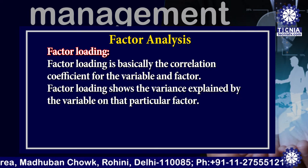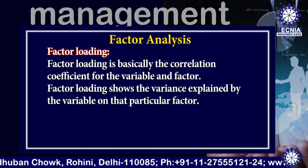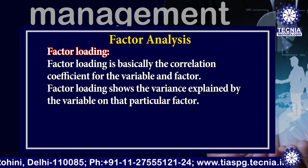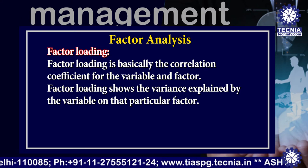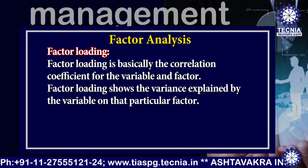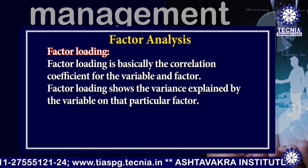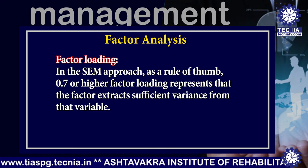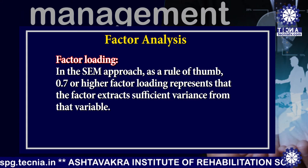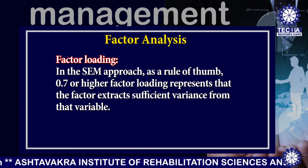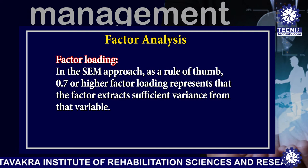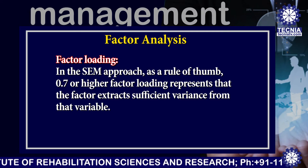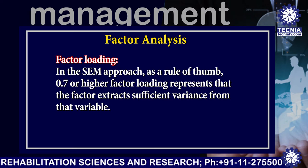Factor loading is basically the correlation coefficient for the variable and factor. Factor loading shows the variance explained by the variable on that particular factor. In the ACM approach, as a rule of thumb, 0.7 or higher factor loading represents that the factor extracts sufficient variance from that variable.